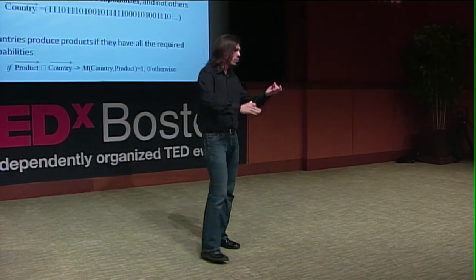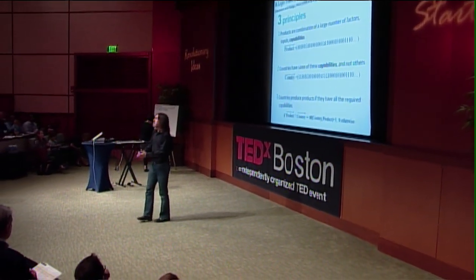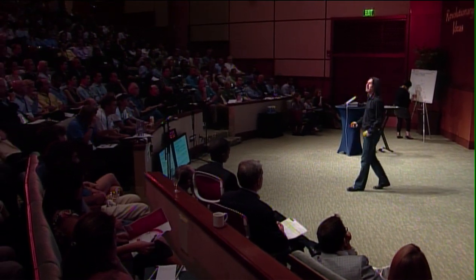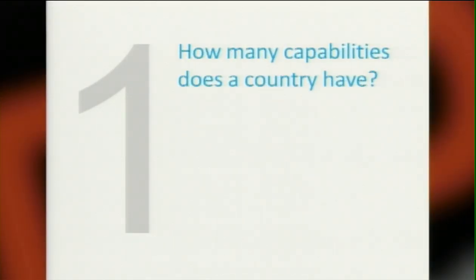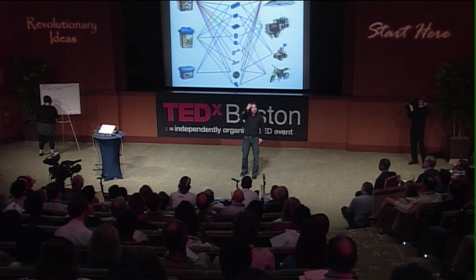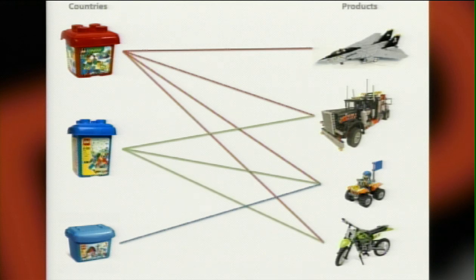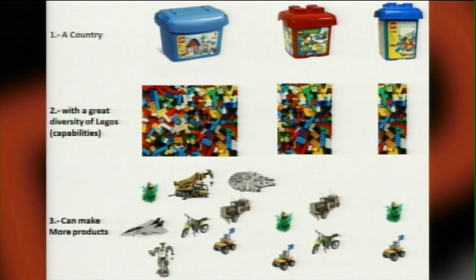The first principle: a product is not two types of putty but a combination of many different Lego pieces. These Lego pieces could be regulations, forms of capital, capabilities within an organization, norms — do workers show up on time? There are many of them, and countries have some and not others. A country can make things if it has all that it takes. The question becomes: which country has more Lego pieces?